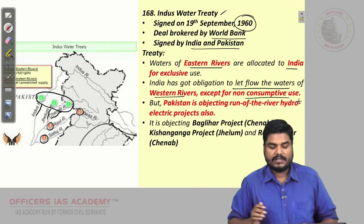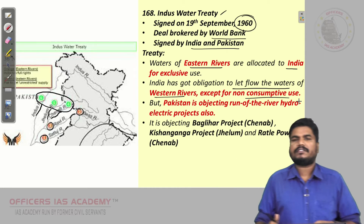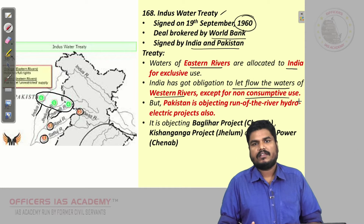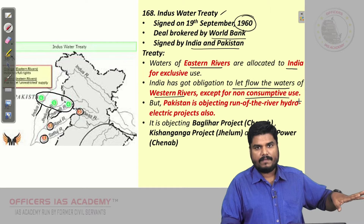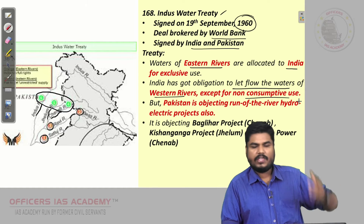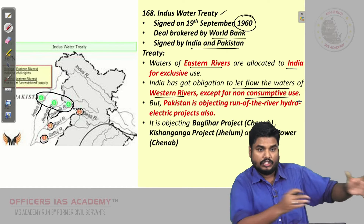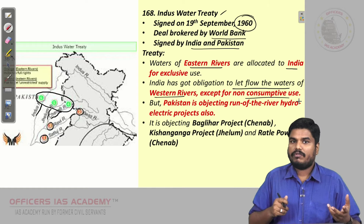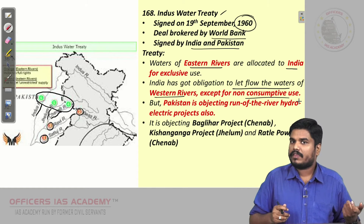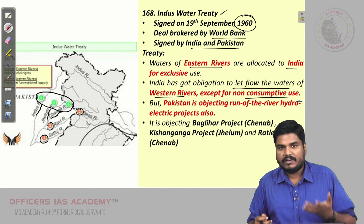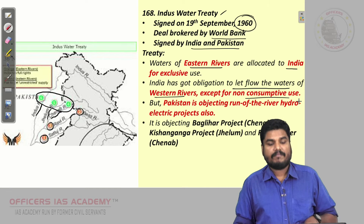What is a non-consumptive purpose? Hydroelectric power projects. Without disturbing the flow and without consuming that water, we can make use of the potential of those rivers. So we can develop hydroelectric power projects according to this treaty.